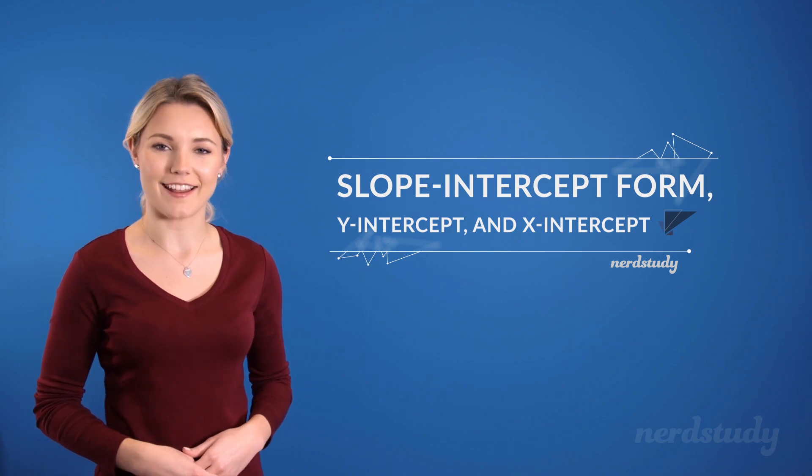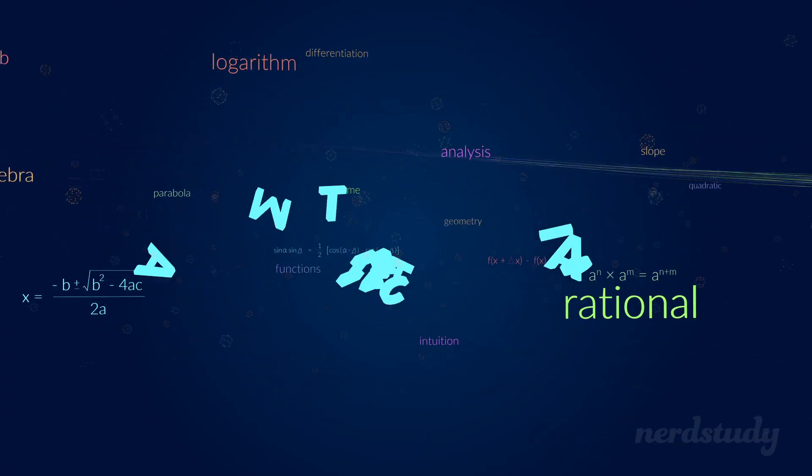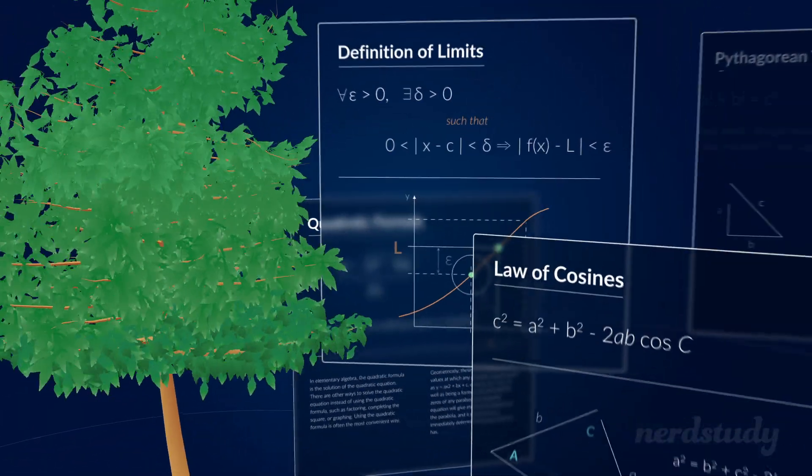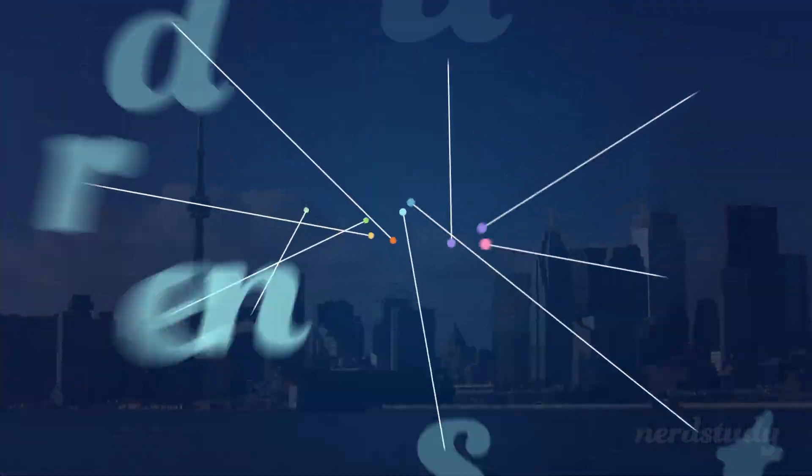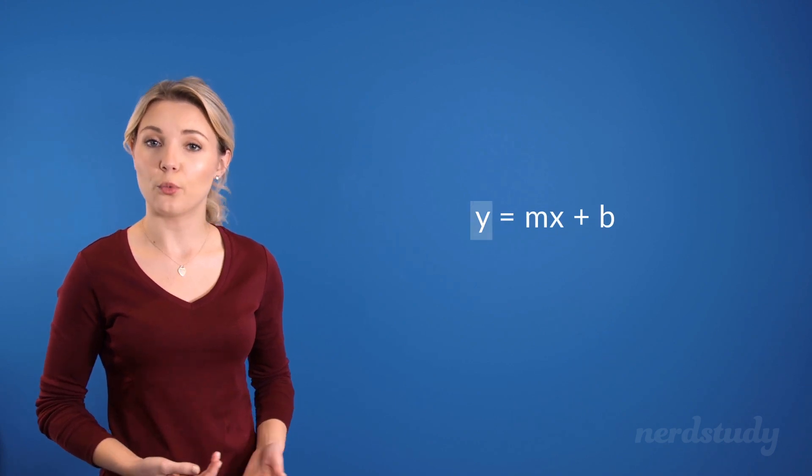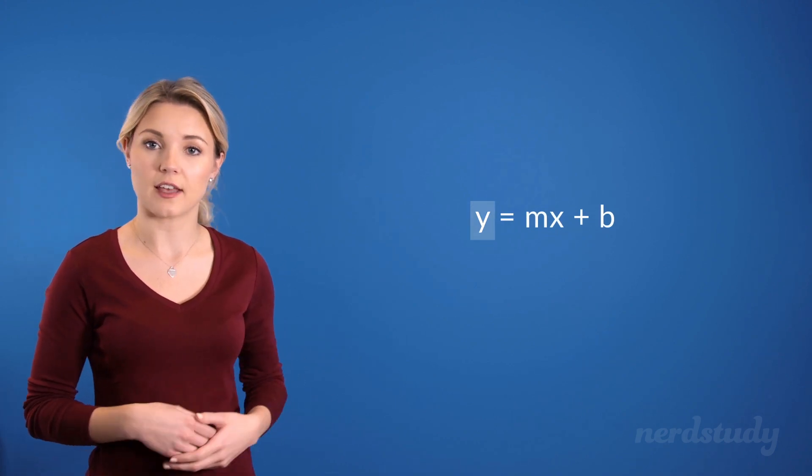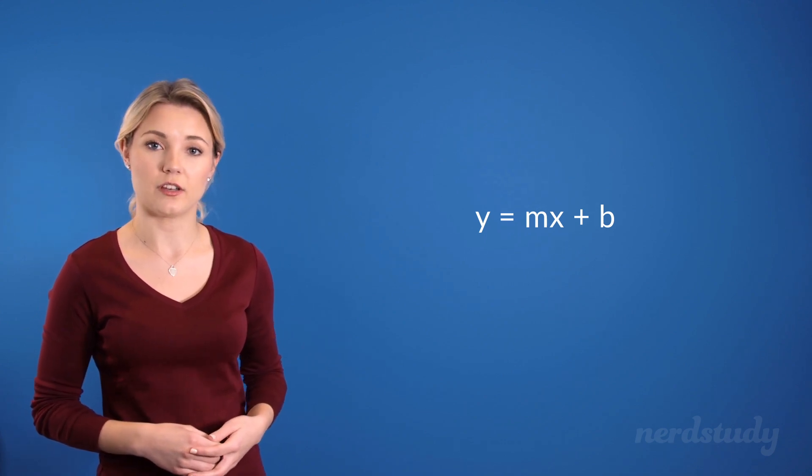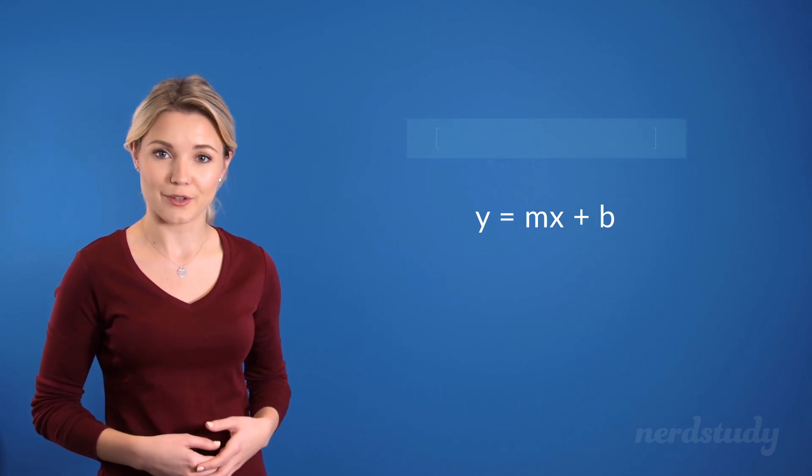Let us go ahead and dive right into it. So far, we've been looking at linear equations that have the y isolated onto the left side. This is a specific way to write the linear equation, and we call this form the slope-intercept form.